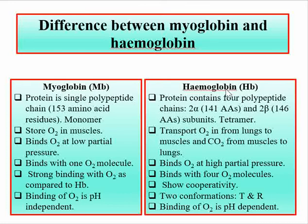Hemoglobin contains four heme groups and four protein subunits, while myoglobin contains one heme group and a single polypeptide chain. Myoglobin is a monomer while hemoglobin is a tetramer.